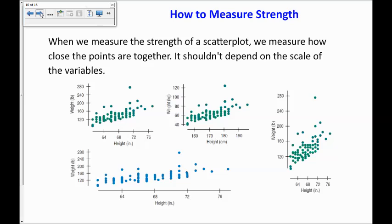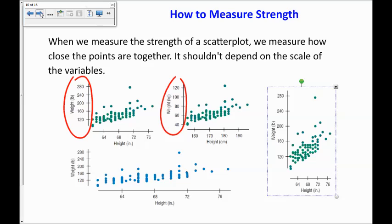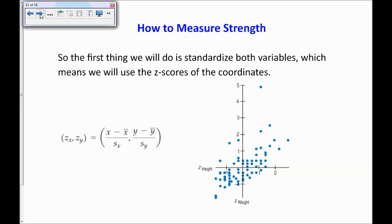I mentioned earlier that there is a way to measure with a number how strong a linear relationship is. So a couple things to discuss before we get into that idea is that we don't want it to depend on the scale of the variables or how they're displayed. These four graphs all display the exact same data, even though this one looks like it's not as strong, and maybe this one looks stronger for some reason. We don't want it to depend on the scales because there are some different scales here, and it also should not depend on the scale of the graph that we've displayed.